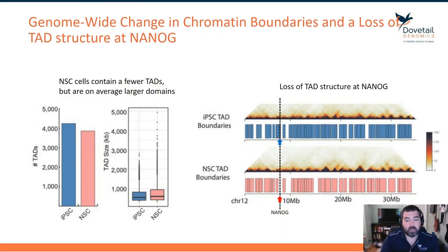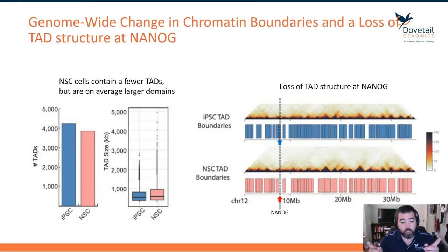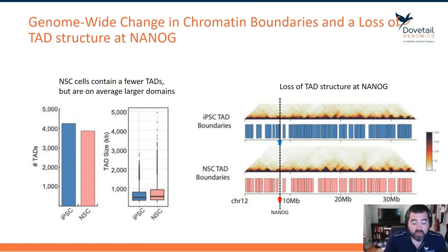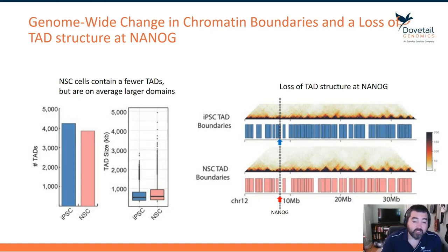These are unique domains with a higher degree of interaction within them than across them. What about the size of these domains? The box-and-whisker plot shows TAD size in kilobases between iPSC and NSC. On average, iPSC cells contain smaller TAD sizes than NSCs.